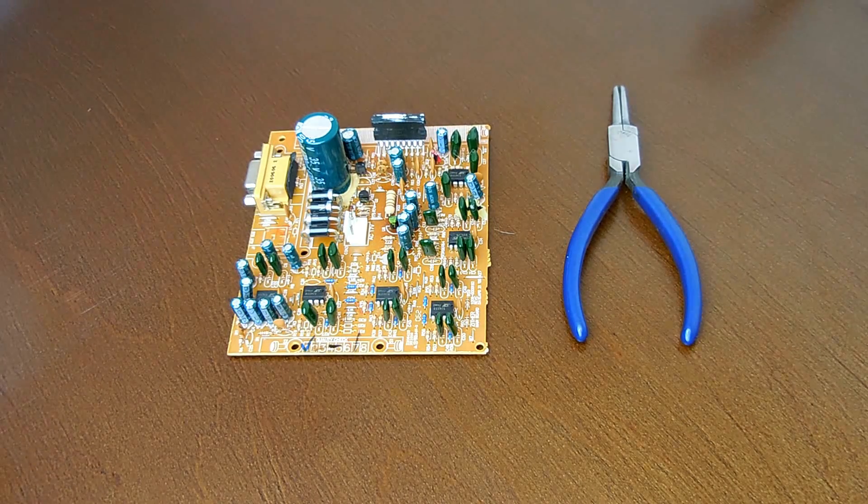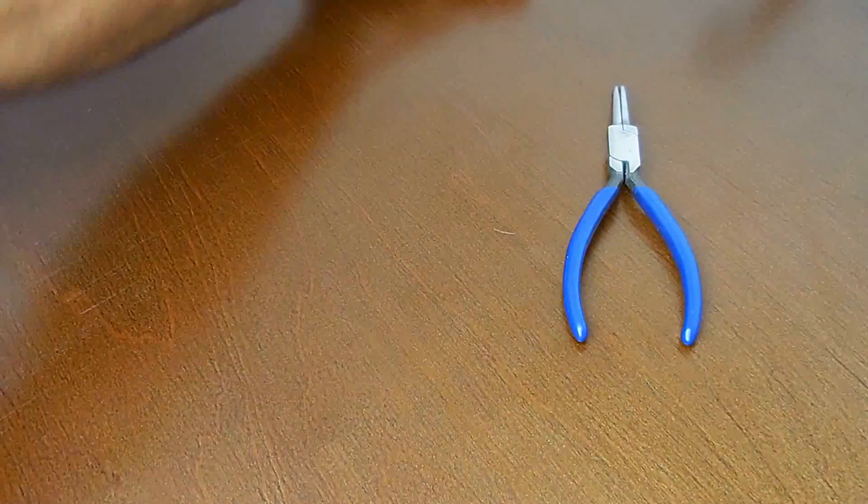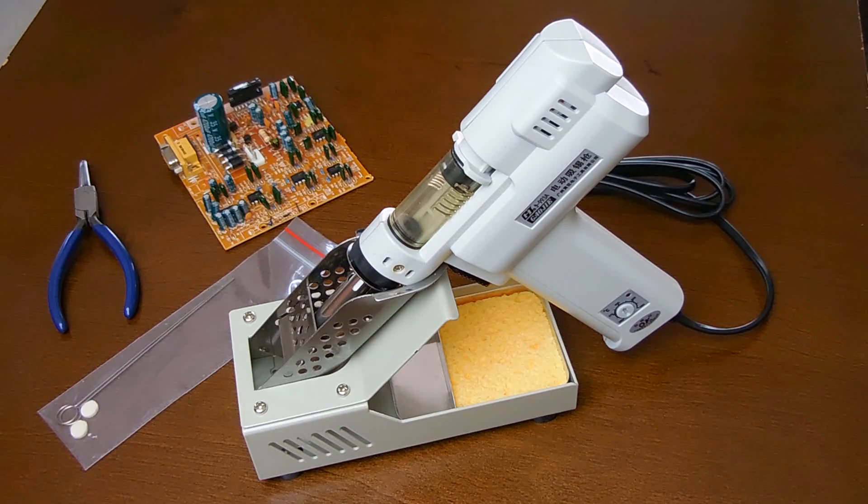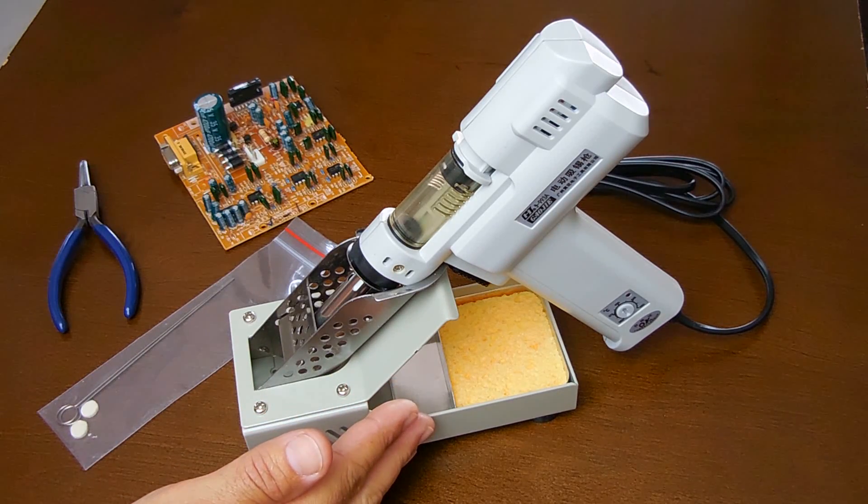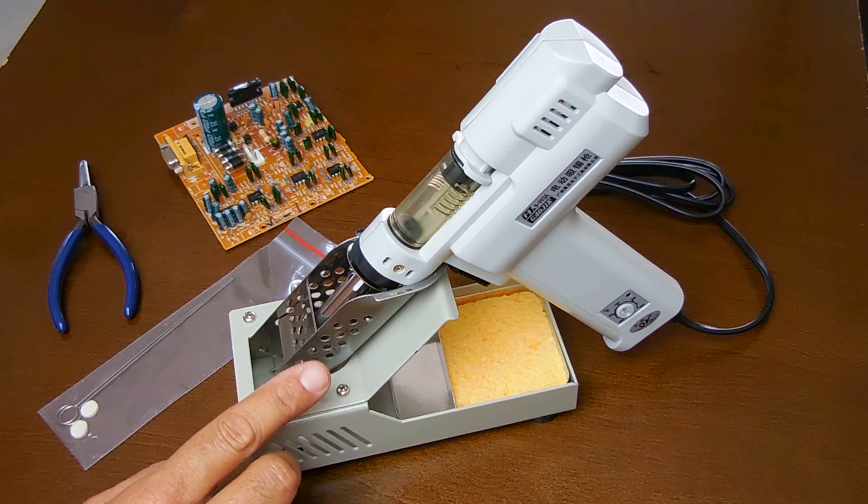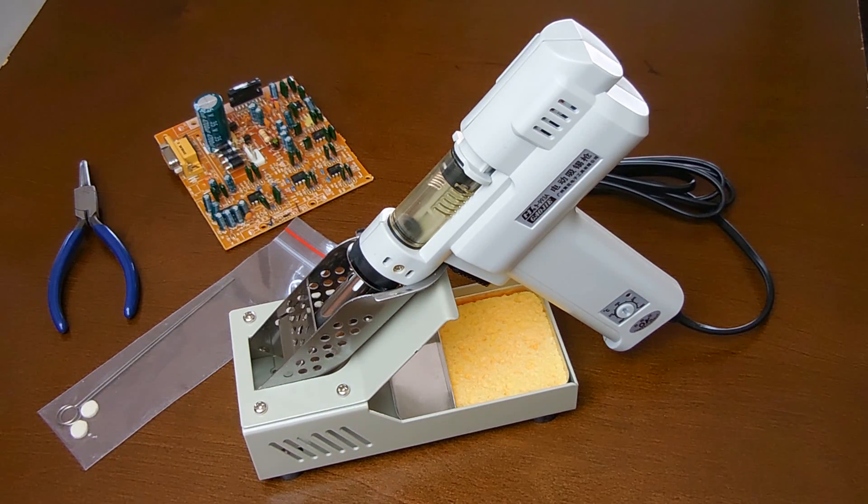When salvaging components, you want to be able to desolder as many as possible in the shortest amount of time, and that is where this tool right here comes in very handy. This unit is available in a 120 volt or 240 volt version. Hakko makes a quality desoldering gun which looks almost exactly like this but retails for more than double the cost.